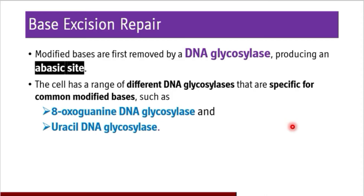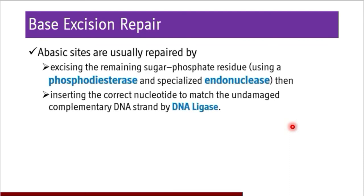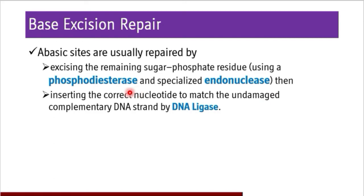Once the abasic sites are formed, they are repaired by excising the remaining sugar-phosphate residue. In a nucleotide, when the base is removed, what remains is the sugar-phosphate backbone. This sugar-phosphate residue is removed with the help of phosphodiesterase enzyme and a specialized endonuclease present to remove the sugar-phosphate residue without any nitrogenous base attached. The correct nucleotide is then inserted to match the undamaged complementary DNA strand by DNA ligase.